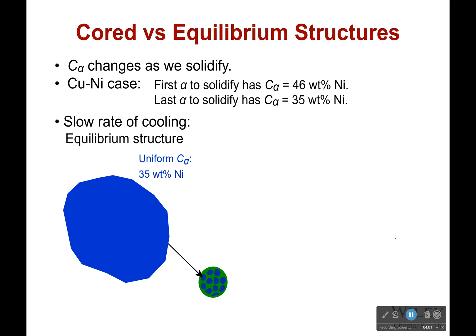However, that's only if we're cooling slow enough. This is if we have a slow rate of cooling, we have this nice equilibrium structure where all of it is 35 weight percent nickel.